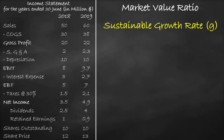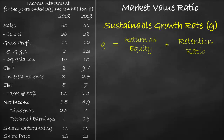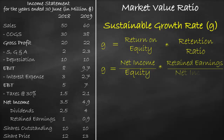The sustainable growth rate formula could also be calculated as return on equity multiplied by the retention ratio. We could substitute the values of these two ratios directly if we calculated them earlier; if not, we calculate them now. The return on equity formula is net income divided by equity, and the retention ratio formula is retained earnings divided by net income.